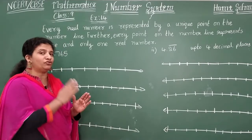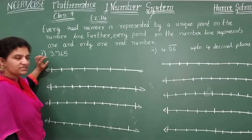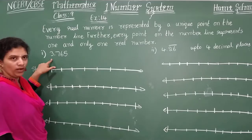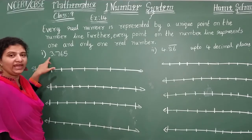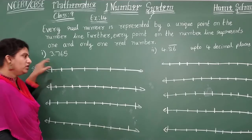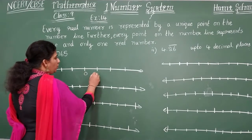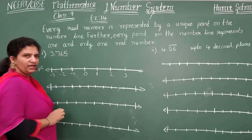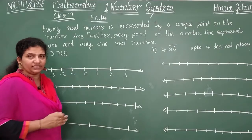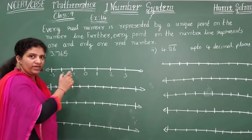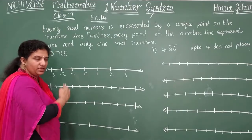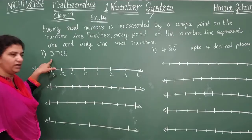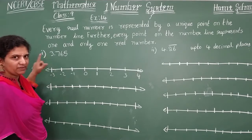Observe carefully. How to represent this on a number line is your question. First step — see the whole number. Where does this 3 appear on your number line? Somewhere I have taken here 0, 1, 2, 3, minus 1, minus 2, minus 3. The number line where each unit is represented with a unit length — this side will be negative numbers and this side will be positive numbers.